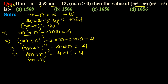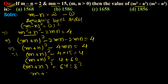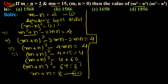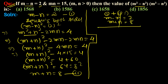So m plus n whole square equals 4 plus 60, giving m plus n equals 8. This is the second equation. So m minus n equals 2 and m plus n equals 8; adding these, 2m equals 10, so m equals 5.